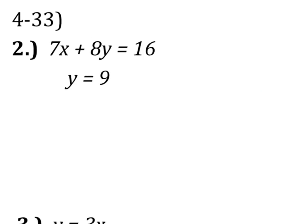The second example is what you're going to see in your IXL when you begin. You're given that Y equals 9. So you are going to take that 9 and replace it in for the Y value. So we now have 7X plus 8, instead of Y, we'll have 8 times 9, equals 16.